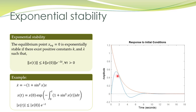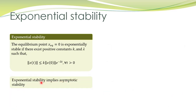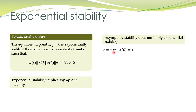An additional observation from the graph is that an exponentially decaying term has a final value of zero. Therefore, if an equilibrium point is exponentially stable, it is also asymptotically stable, because the trajectories finally converge to the equilibrium point at the origin. Exponential stability implies asymptotic stability; however, the opposite is not true. Here is a counter-example: a nonlinear system whose solution can be verified by taking the derivative and substituting it into the differential equation.